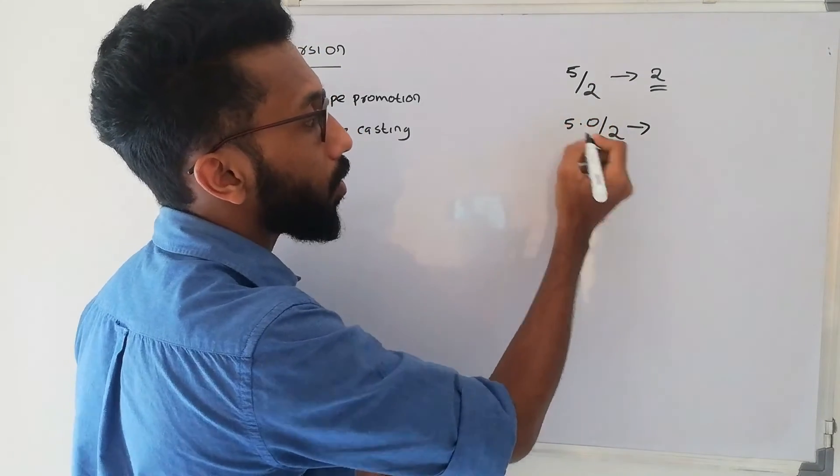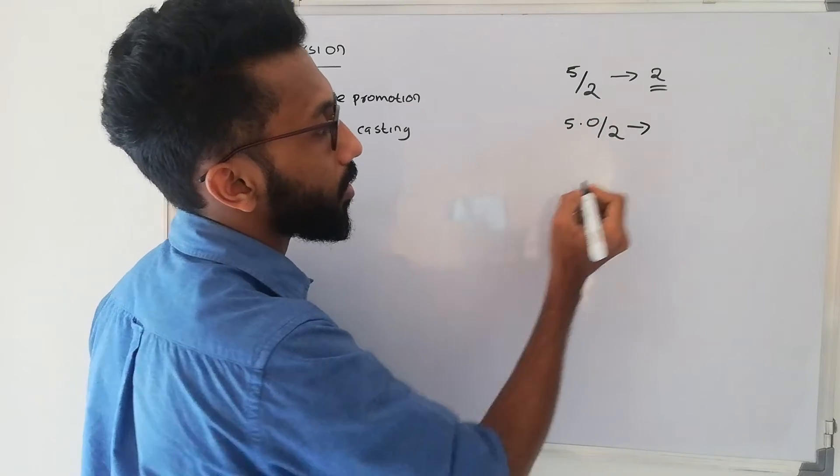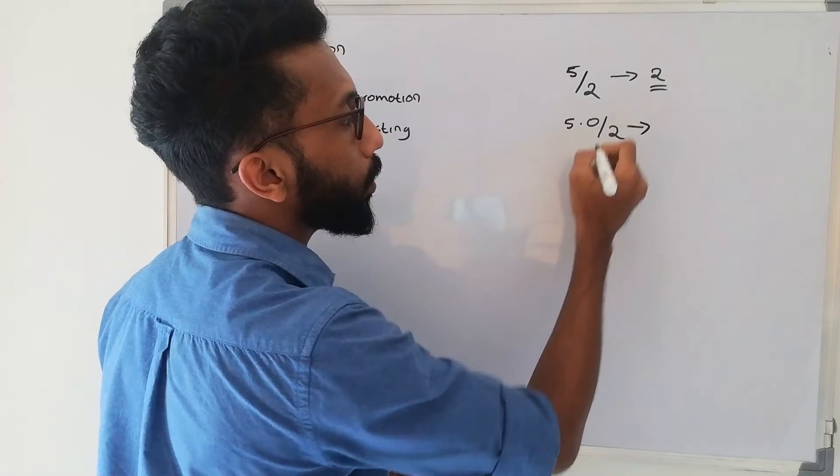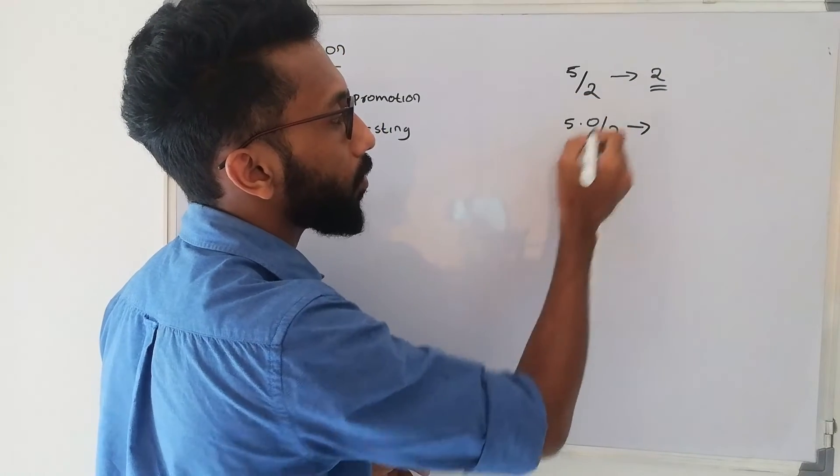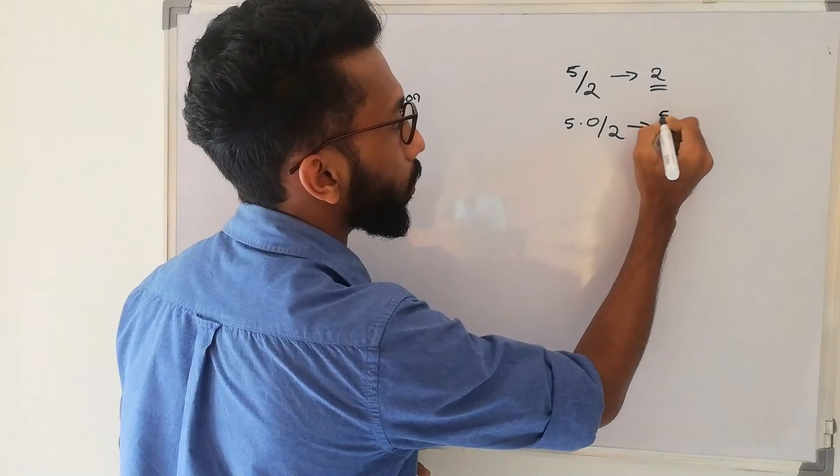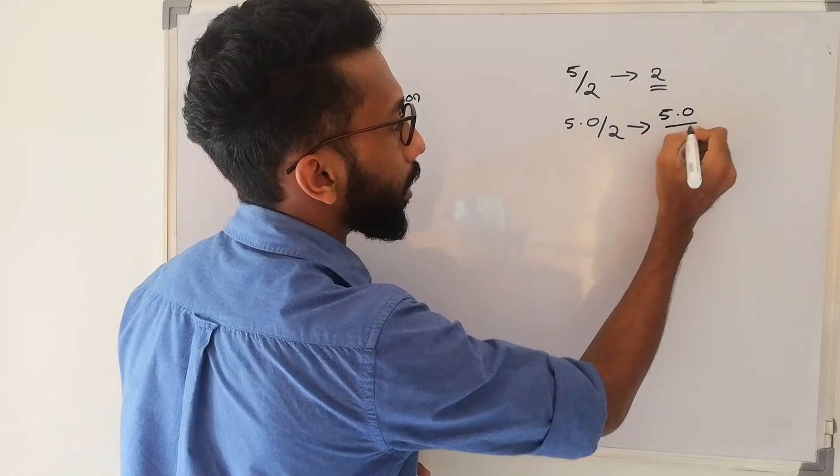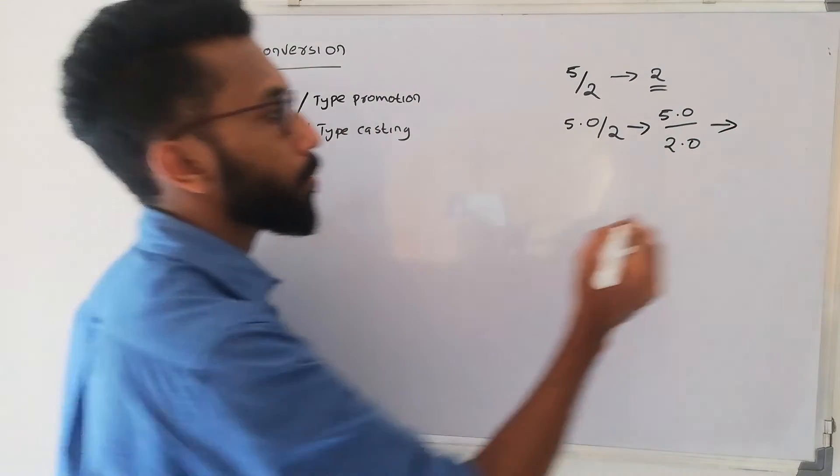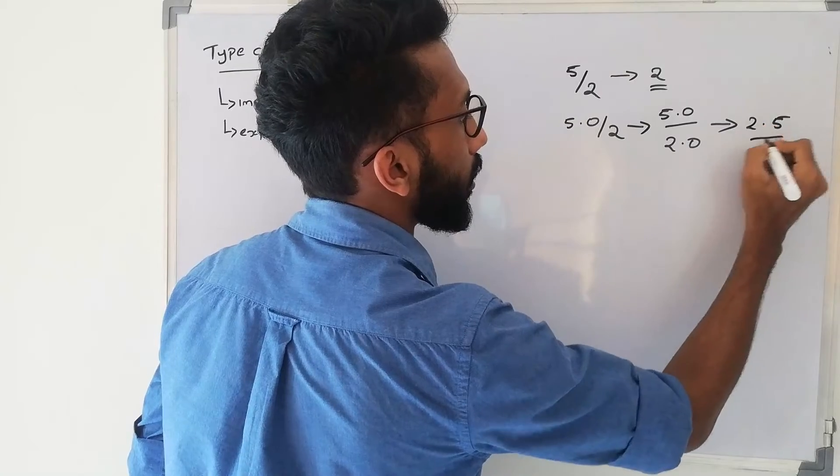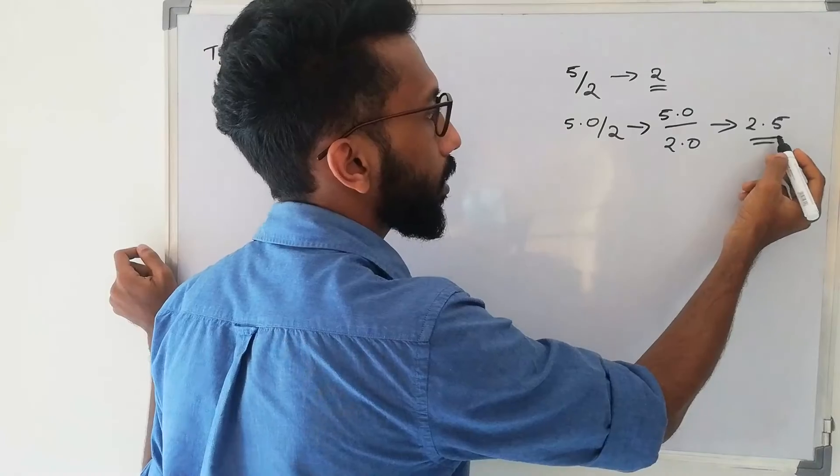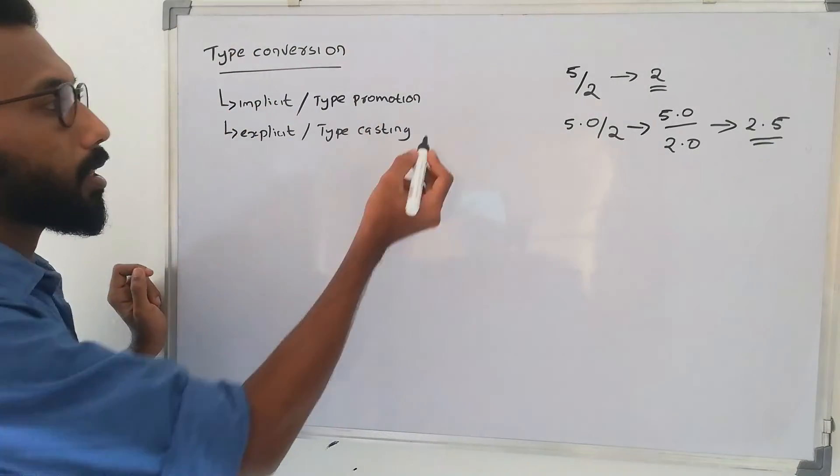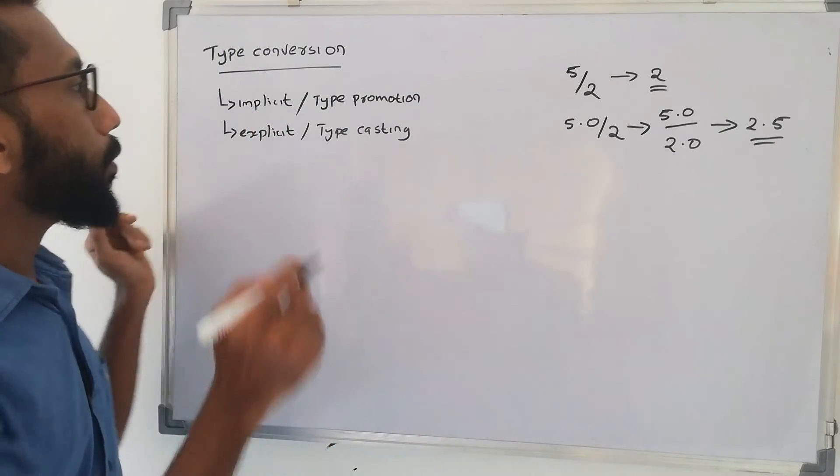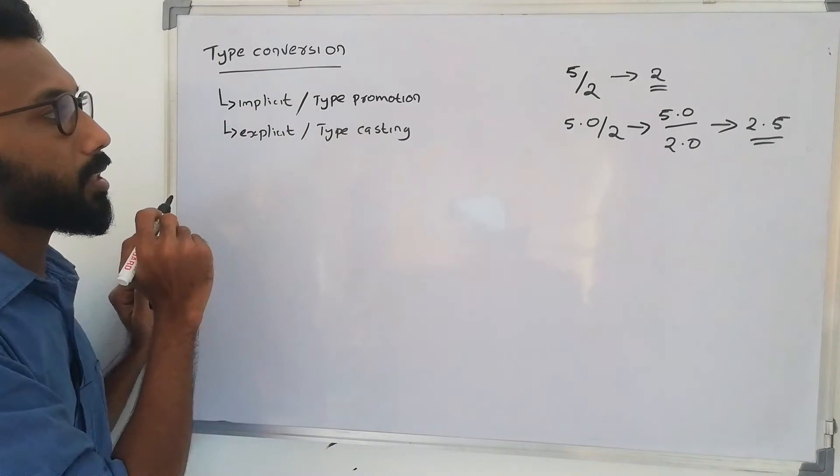Lower data type to higher data type. Integer is lower data type and floating point is the higher data type. 5.0 divided by 2.0, the output returned is 2.5. This is implicit conversion.